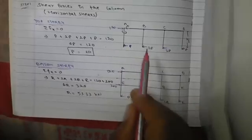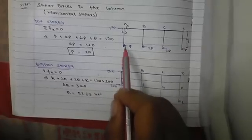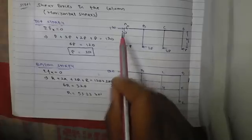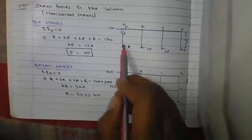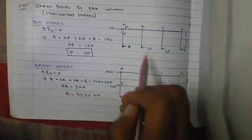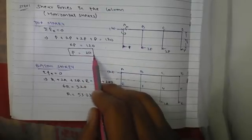The first step is to find the shear forces in the columns. For the top story, contra-flexure occurs at the midpoint, which is half the distance. Using sigma Fx = 0, we add all forces acting in the columns: p + 2p + 2p + p = 6p, and 120 kilonewtons is acting in the horizontal direction. So we get p = 20 kilonewtons.